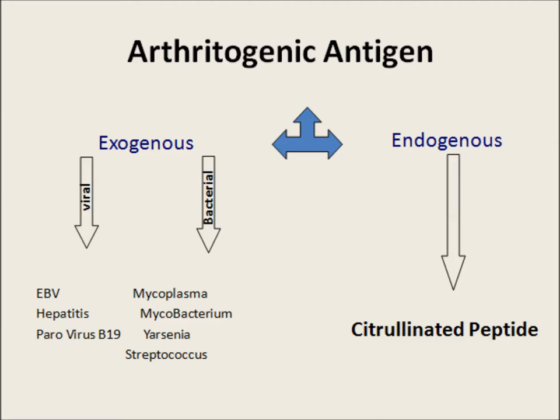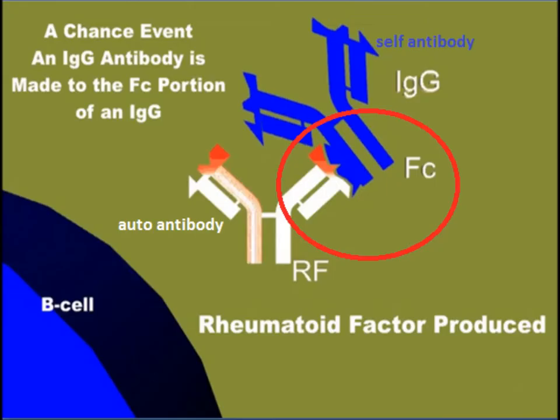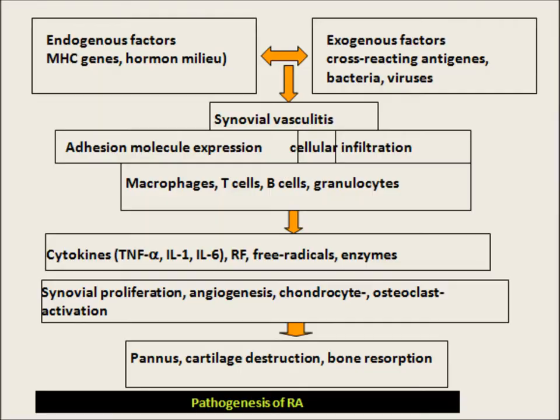Citrullinated peptides are formed by the action of the peptidyl arginine deaminase enzyme, and then antibodies are formed against them. These are called anti-citrullinated protein antigens (ACPAs). There are also antigens against the Fc portion of IgG. This is a brief summary of the pathogenesis of rheumatoid arthritis.